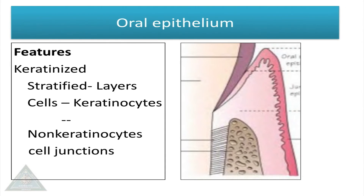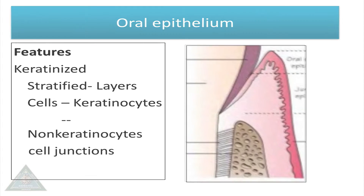Outer or oral gingival epithelium is keratinized. It is a stratified squamous epithelium. It can be either parakeratinized or orthokeratinized, with keratinocytes and non-keratinocytes like Merkel cells, Langerhans cells, and melanocytes, with tight junctions.